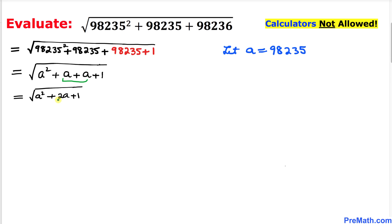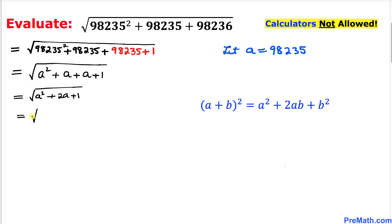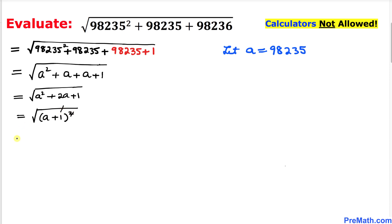Now let's focus on the radicand: a squared plus 2a plus 1. Here, 1 could be written as 1 squared, and if we compare with the perfect square formula, we can see that this represents a perfect square. Therefore, the square root of this perfect square is going to be (a+1) squared. The square and the square root undo each other, so our simplified answer turns out to be a plus 1.